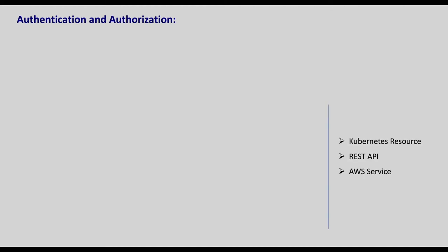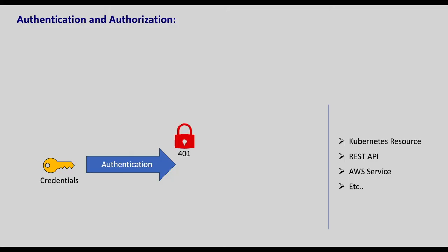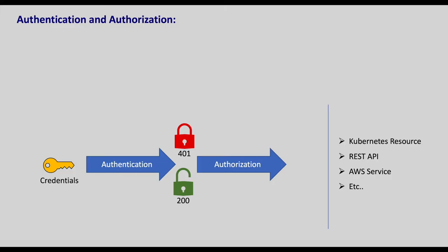In general, to access any resource, be it a Kubernetes resource, REST API, AWS service or any other service, first we should prove that we are a valid user by giving our credentials. This process is called authentication. If we are not having access to the requested resource, we will be thrown out with the 401 error. And if we are a valid user, we will get a 200 response.